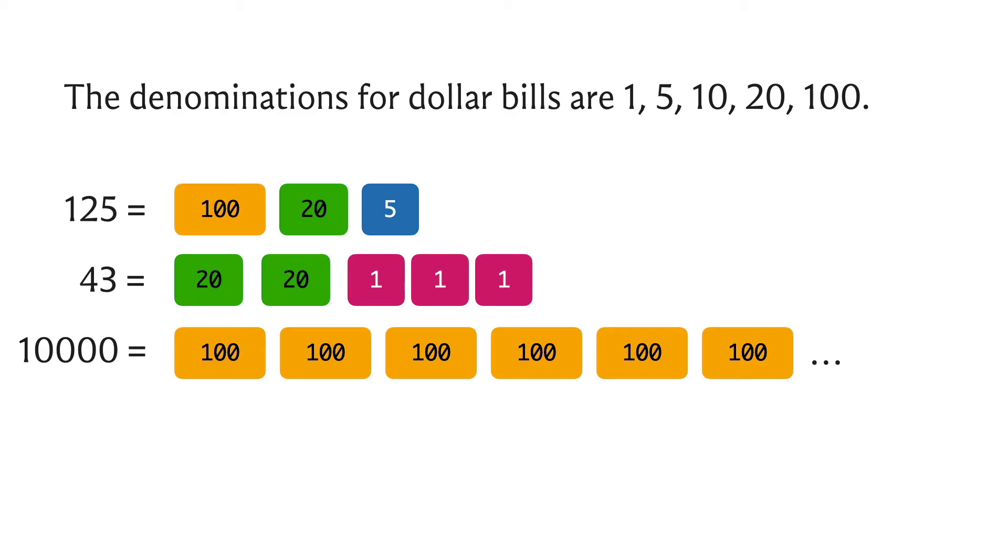But to see that this actually does always generate the smallest number of bills for this combination of denominations does require a bit of an argument. Now I will not go through a complete and formal proof, but I'll just try to convey some intuition for what is going on. Sometimes these coin systems for which the greedy algorithm does produce the right answer are called canonical systems, and a property that these canonical systems have is that if you look at the larger denominations they are always divisible by all of the smaller ones. So for instance here, 100 is divisible by 20, 10, 5 and 1; 20 is divisible by 10 and 5 and 1, and so on. Let's see why this property might be useful to us.